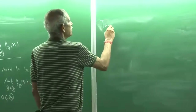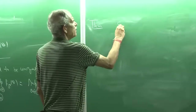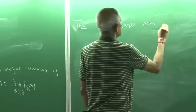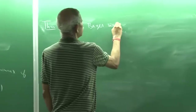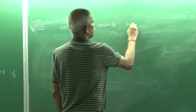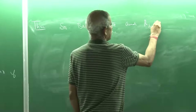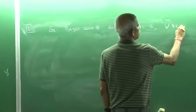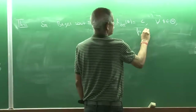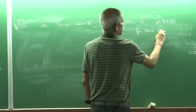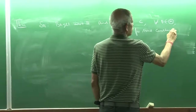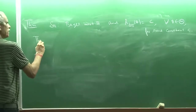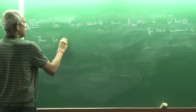Let me write down this result. If delta_pi is Bayes with respect to prior pi and its risk is constant — that is, r(delta_pi, theta) = C for every theta in Theta for some constant C — then delta_pi is Minimax.